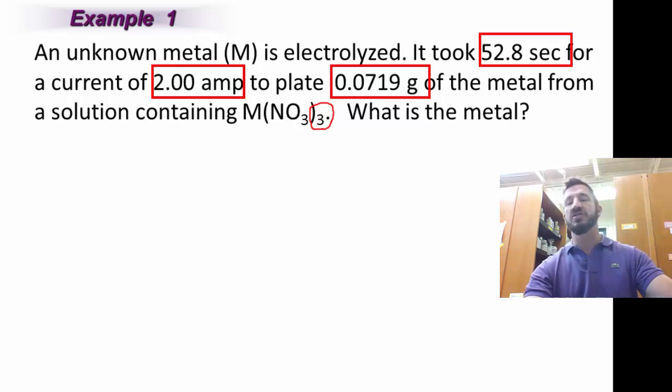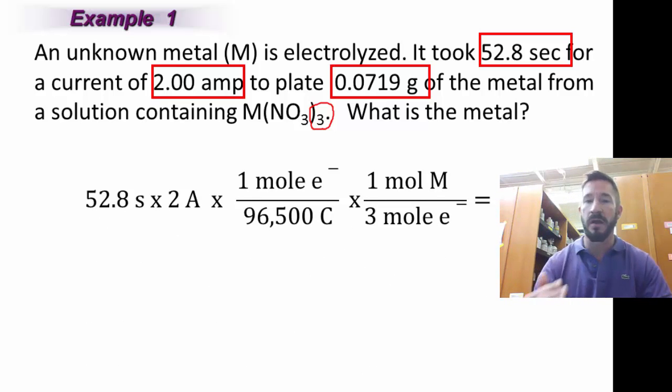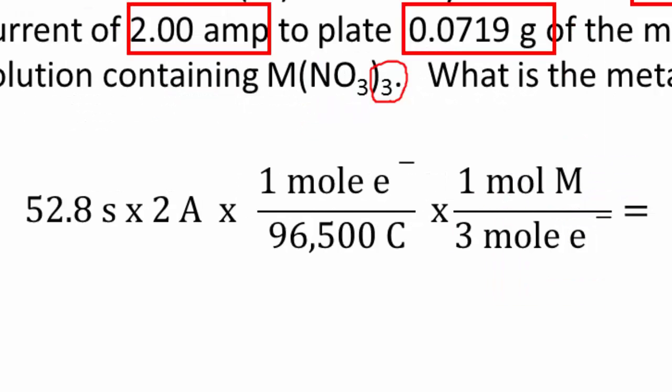Here's the way this would work. I'm just going to show you the whole thing and we're going to go through it one thing at a time. So if we want to identify metal, what we really need is molar mass. Molar mass is grams per mole. We already have the number of grams right here. So we know the grams is 0.0719 grams. What we need is a number of moles of that metal.